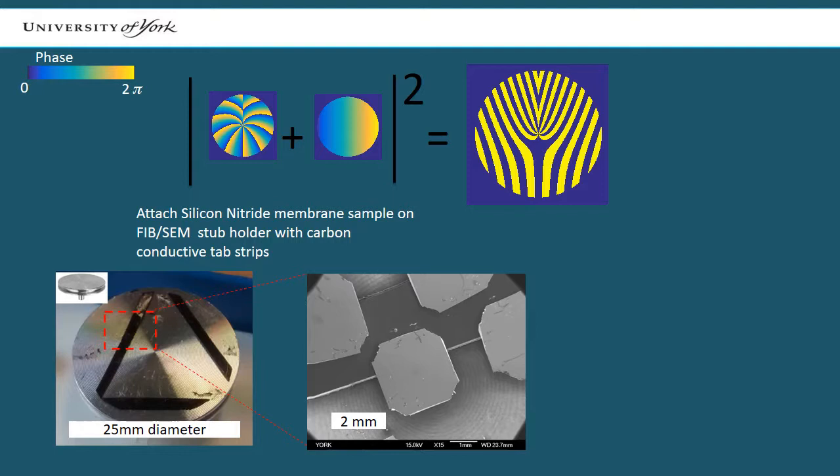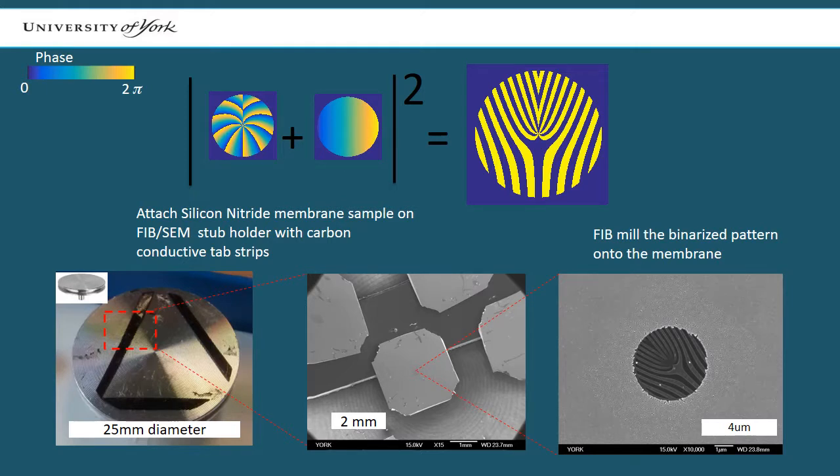Focused ion beam milling is then used to remove a disk of platinum and turn the binary mask image into silicon nitride membrane thickness variations.